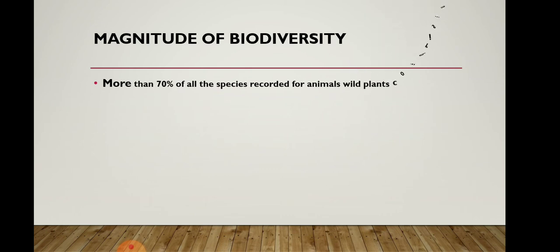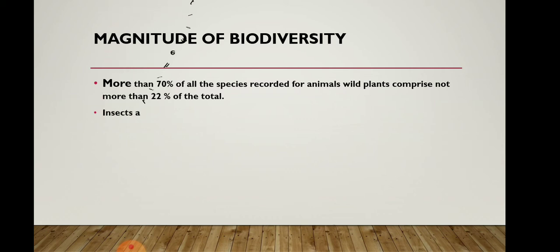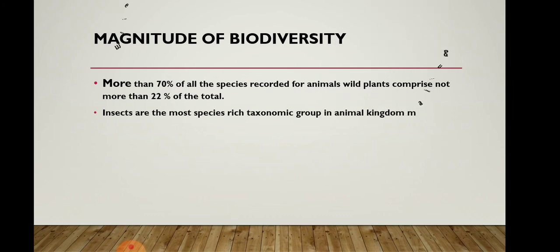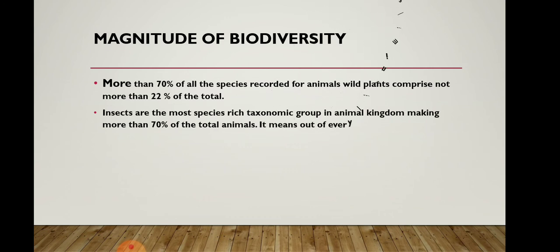Insects are the most species-rich taxonomic group in the animal kingdom, making up more than 70 percent of total animals. The most species-rich group within the phylum Arthropoda is insects — near about 70 percent of the total animal species are only insects on Earth's surface.